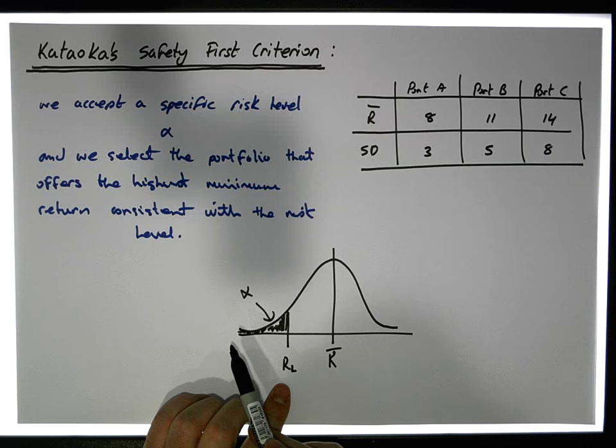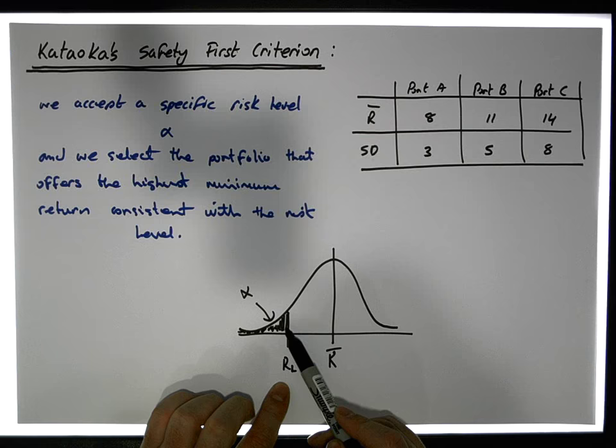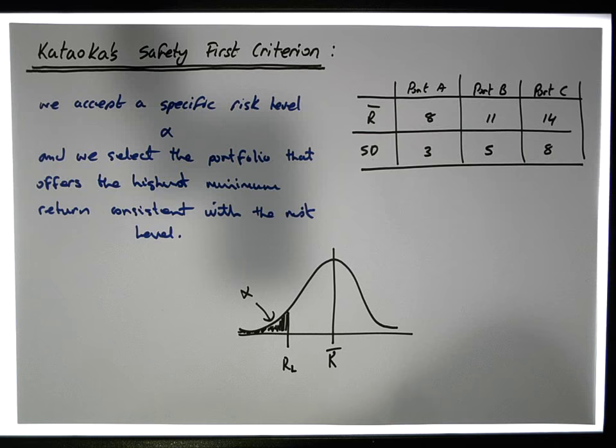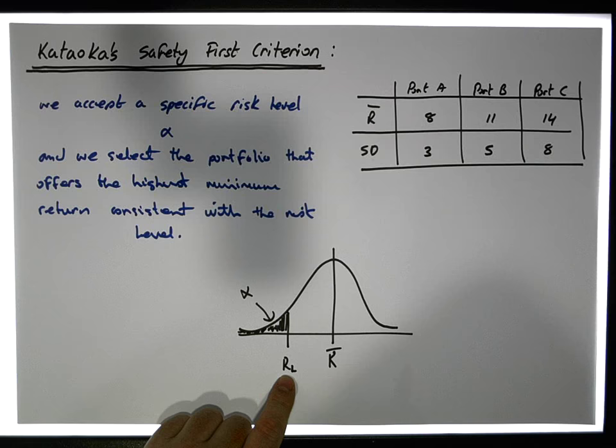That return level is based on alpha — how much area we put in the left-hand tail. Out of all possible portfolios, we're going to choose the one that has the highest minimum return consistent with this particular risk level.